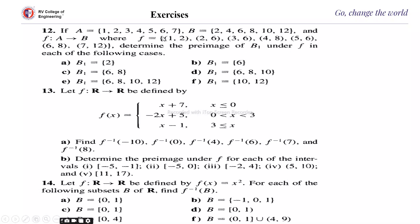We are not concerned here about whether f is one-to-one or onto. For b₁ = {2}: 2 is associated with 1 only, so the preimage is {1}. For b₁ = {6}: 6 is associated with 2, 3, and 5, so the preimage is {2, 3, 5}.